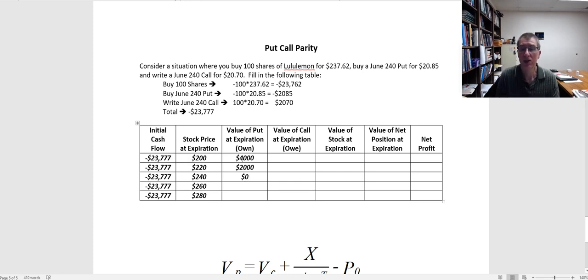Remember, an option is the right but not the obligation. So I could sell a $260 stock for $240, but why would I want to? I could sell it for $260 without the option. I don't have the obligation to use the option, so I'm going to let that expire worthless. Same thing if the stock is at $280.